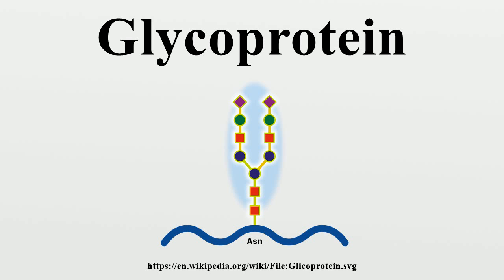There are several types of glycosylation, although the first two are the most common. In N-glycosylation, sugars are attached to nitrogen, typically on the amide side chain of asparagine. In O-glycosylation, sugars are attached to oxygen, typically on serine and threonine, but also on non-canonical amino acids such as hydroxylysine and hydroxyproline.